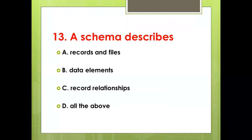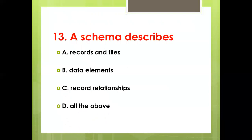Thirteenth bit: A schema describes — Option A: Records and Files. Option B: Data Elements. Option C: Record Relationship. Option D: All the Above. Answer: Option D, All the Above.